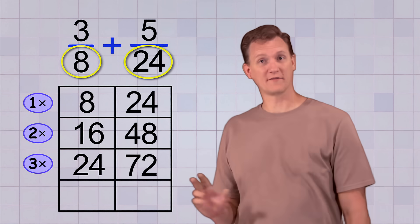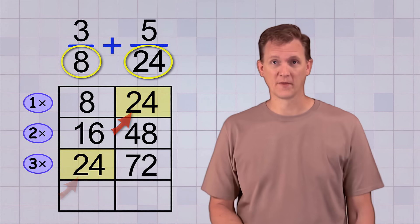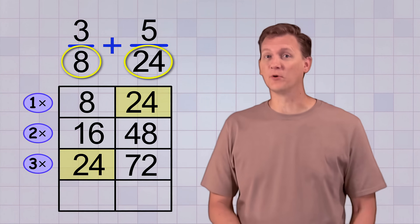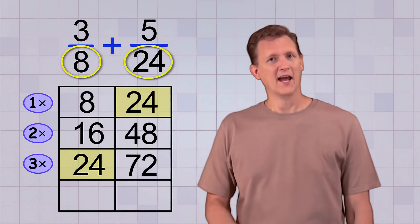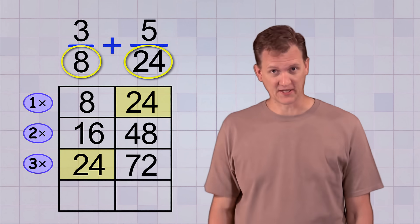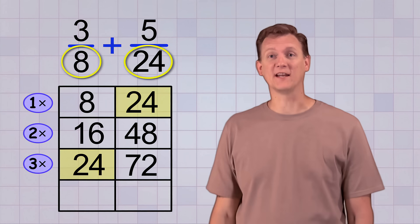But look! We have something in common now. We have a 24 in each column. We have found the least common multiple of the numbers 8 and 24, and it happens to be 24. That makes sense if you remember your multiplication tables, that 3 times 8 equals 24.